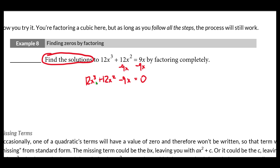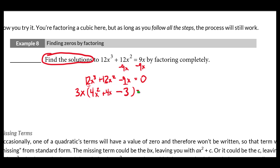Step 2 says to factor out any numbers or variables common to all terms. We have an x common to all terms and also a 3 common to all terms — we can pull a 3 out of the two 12s and the 9. So we pull out a 3x: 12x³ divided by 3x is 4x², 12x² divided by 3x is 4x, and negative 9x divided by 3x is negative 3. So we get 3x times (4x² plus 4x minus 3). That all checks out.